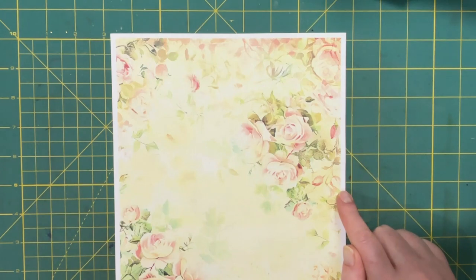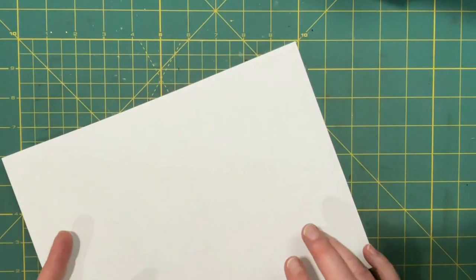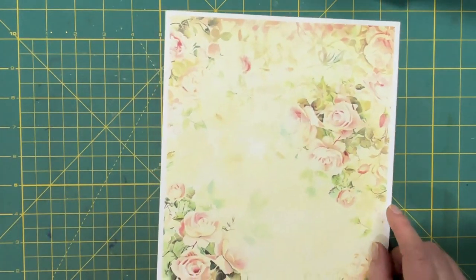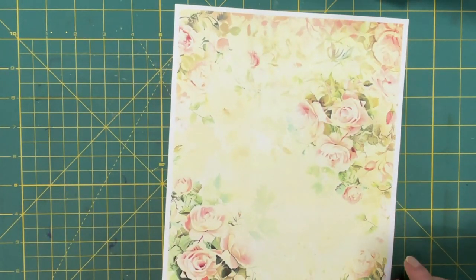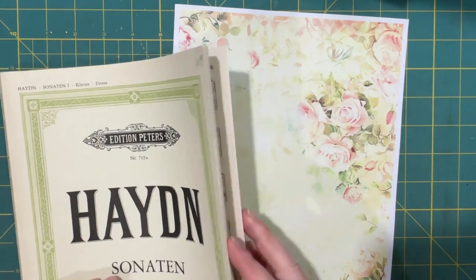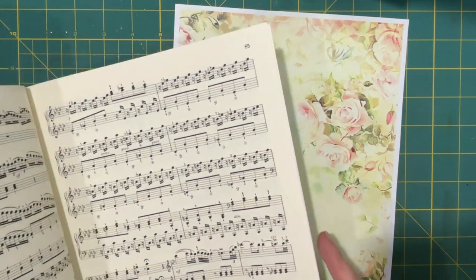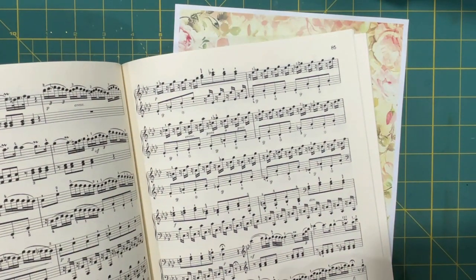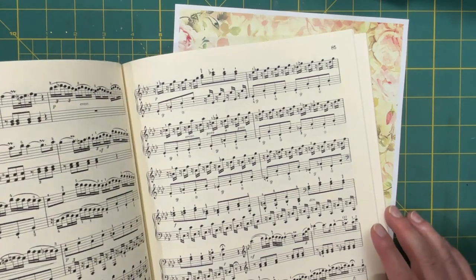I might trim this. I won't coffee dye the back because I'm going to line this, and I found these music sheets at the thrift store. When I saw how busy the inside is, I decided this was going to be my go-to for my envelopes.